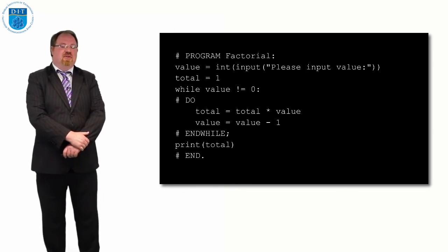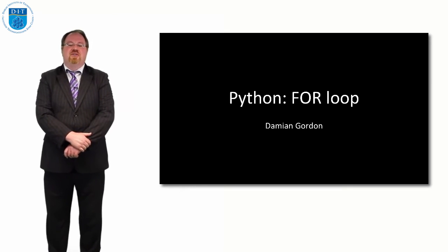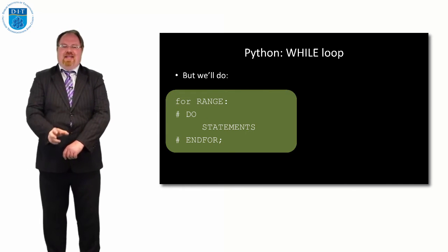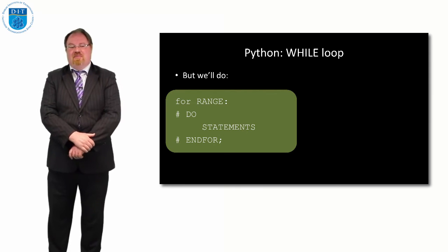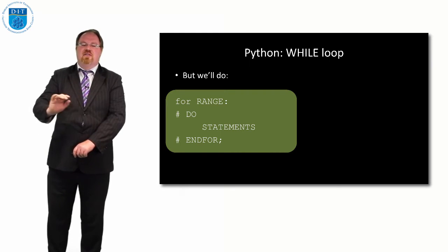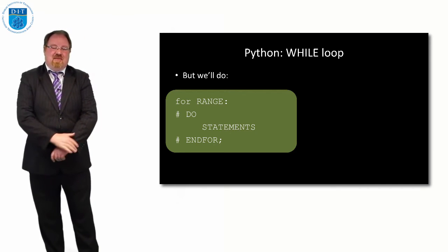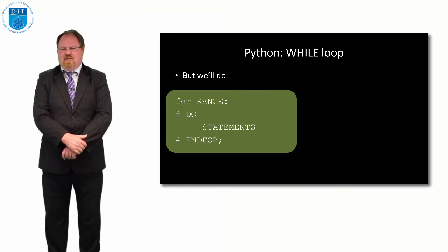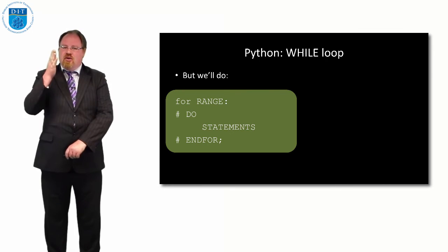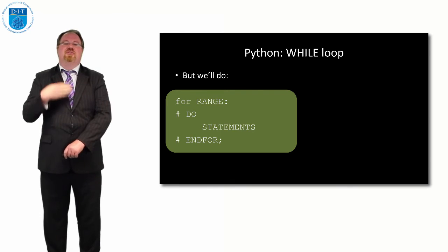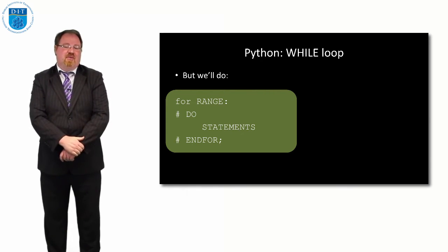Now for the for loop. In Python, the for loop works as follows: 'for some range colon do some statements.' I'd like us to write it as 'for some range do in for,' using hash comments that Python will ignore. I always say this to programmers - I used to be a software developer and a software team leader. You are writing code for the next person. You'll write code for a company and then leave, and somebody else will have to read your code. The more clearly you can make it, the more professional you are as a software developer.